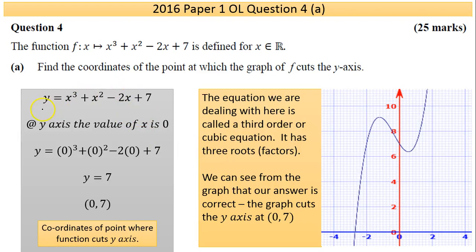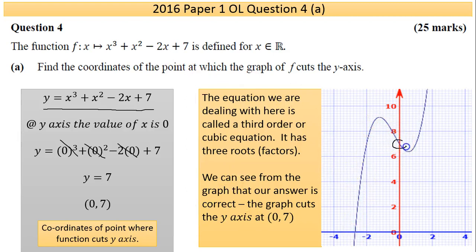Now for the actual answer: I've written out my cubic equation, replacing the function notation with y to make it more familiar. At the y-axis the value of x is zero, so I've replaced x with zero throughout the cubic equation. Everything cancels and you're left with y equals 7, so the point is (0, 7). I've drawn that cubic using a function grapher and you can see that's correct.